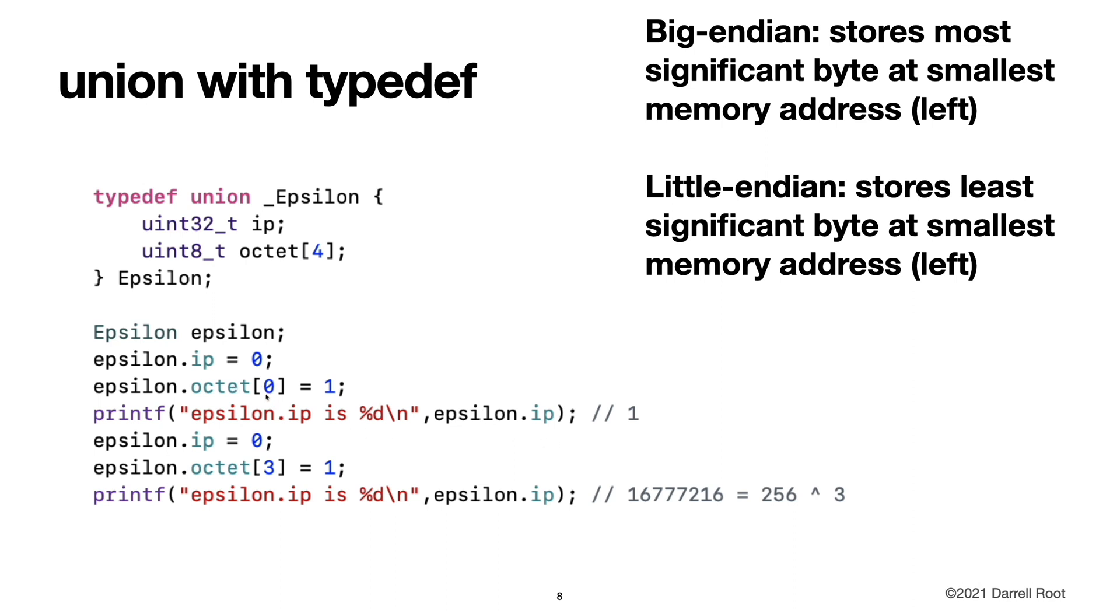I set the smallest memory address to one and the smallest octet to one. And then when I access it via the unsigned 32-bit integer, the value is only one. And then I reverse it so that the largest memory address is set. And in that case, when I access it via the unsigned 32-bit integer, I get a large number.